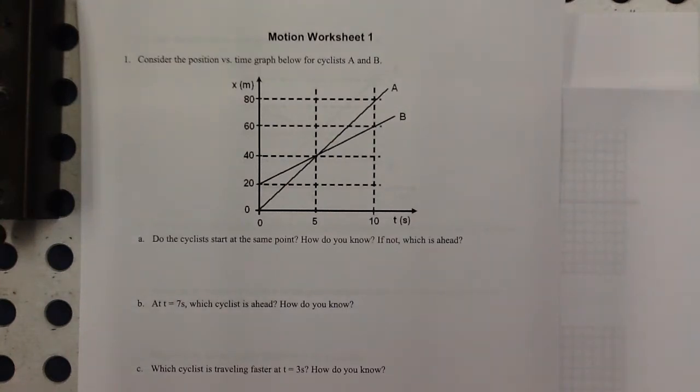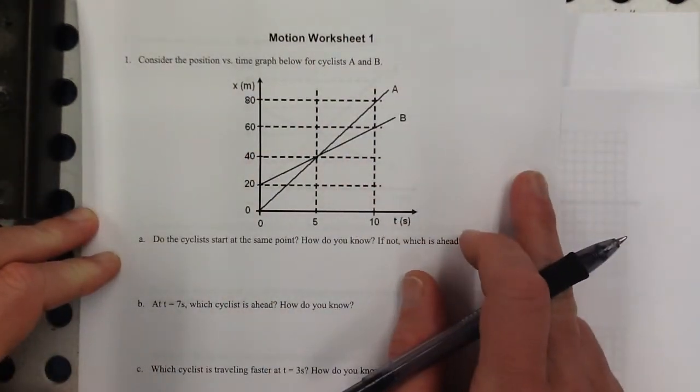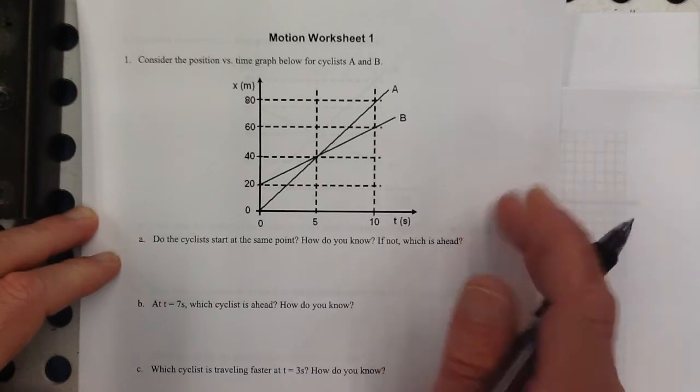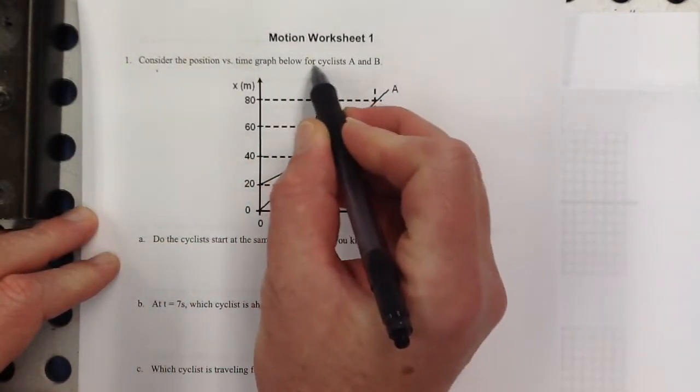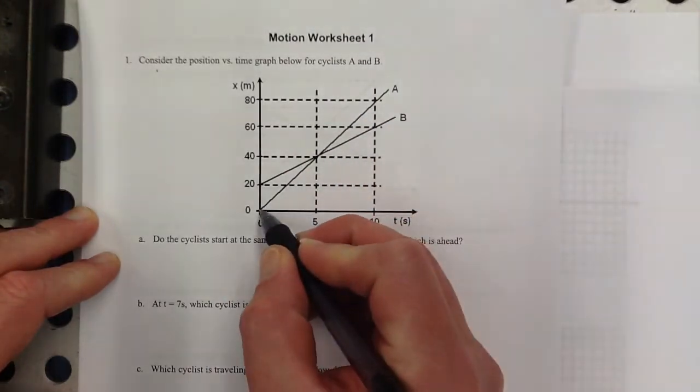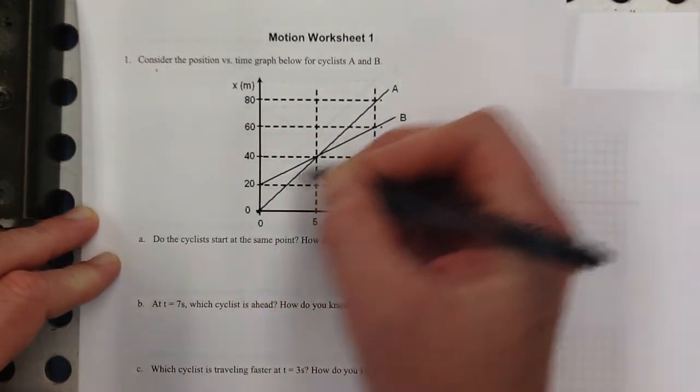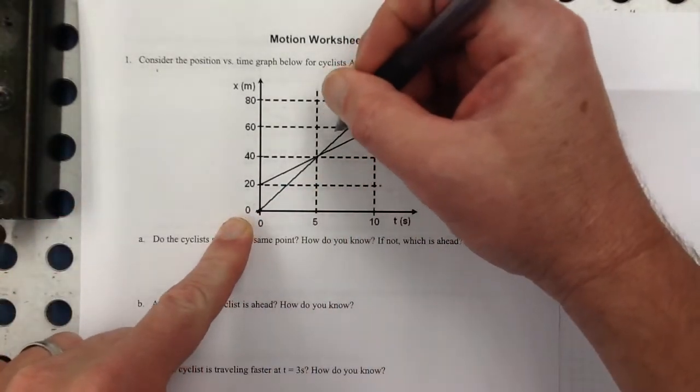I'm going to go ahead and do this motion worksheet one, and we can compare our answers, or you can compare yours to this. What we've got here, consider the position versus time graph for the cyclists A and B. This one's A, starts at the origin, starts at zero, and has a slope.